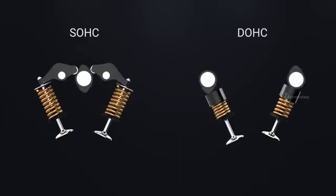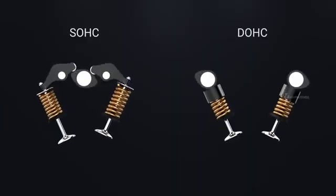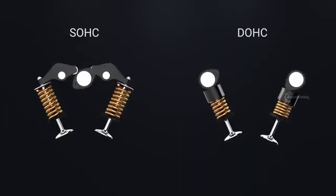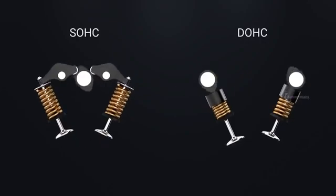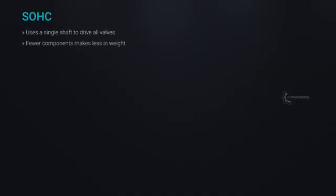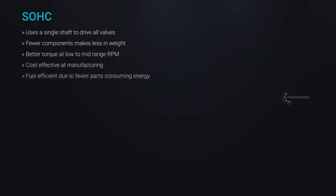When it comes to choosing between SOHC and DOHC engines, both have their own pros and cons. SOHC uses a single shaft to drive all valves; fewer components make it less in weight. It offers better torque at low to mid-range RPM, is cost effective at manufacturing, and fuel efficient due to fewer parts consuming energy. However, the camshaft being at the center denies the ideal location for spark plugs.